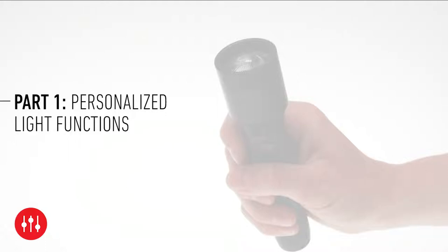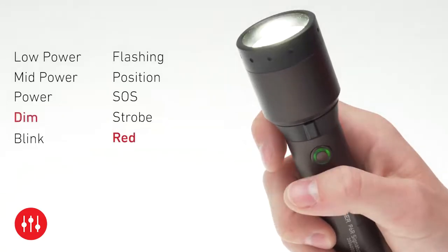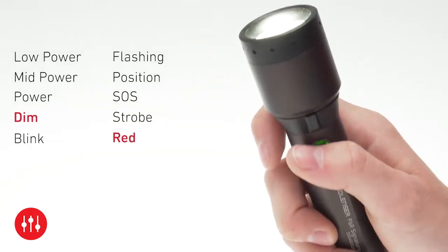For example, which light functions are available in which order, exactly as you need them and independent of the factory settings. Let's say you want to start with red light, then set light at a dimming level of your choice, and finally set blink light.